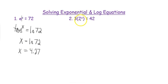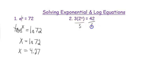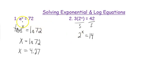For example 2, we have to get rid of the 3 first. We have to get down to the exponential equal to whatever, so you want to divide by 3 to begin with. Then you have 2 to the x equals 14, and we're in a similar situation as before, except our base is not e, it's 2.